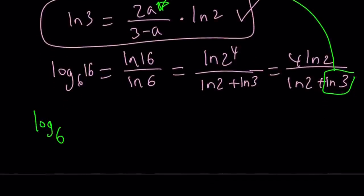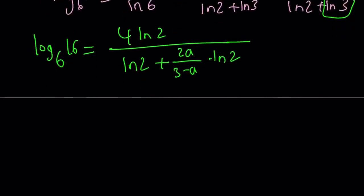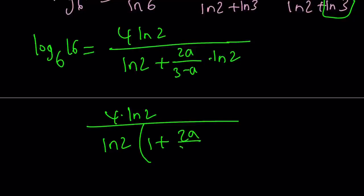So my expression that I'm trying to evaluate can be written as 4·ln(2) divided by ln(2) + ln(3), which can be written as (2A)/(3-A) times ln(2). And this is the critical part. You can take out ln(2) and factor. I mean, simplify. Whatever. Take out ln(2). You're going to get 1 + (2A)/(3-A). This is what we're trying to evaluate.